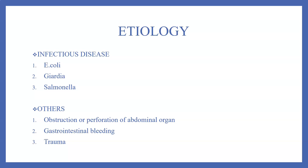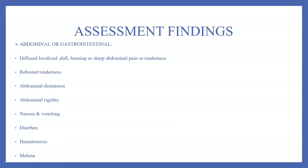Other causes include obstruction or perforation of an abdominal organ, gastrointestinal bleeding, and trauma. As nurses, the assessment findings include diffuse or localized, dull, burning, or sharp abdominal pain or tenderness. There could be rebound tenderness, which is seen in conditions like appendicitis, and abdominal distension with a rigid abdomen.